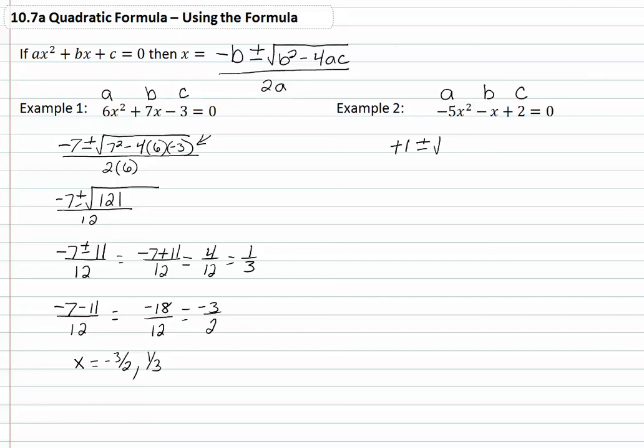We have ± √(1² - 4(-5)(2)) all over 2(-5).